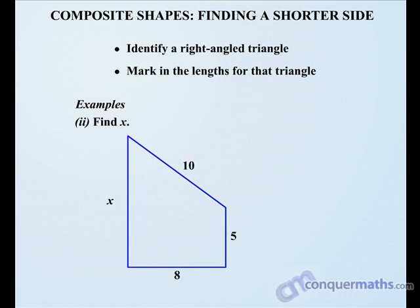Our next example here, we are asked to find X again. So let's identify where the right-angled triangle is. If we draw a line there, there's our right angle, and there's our right-angled triangle.